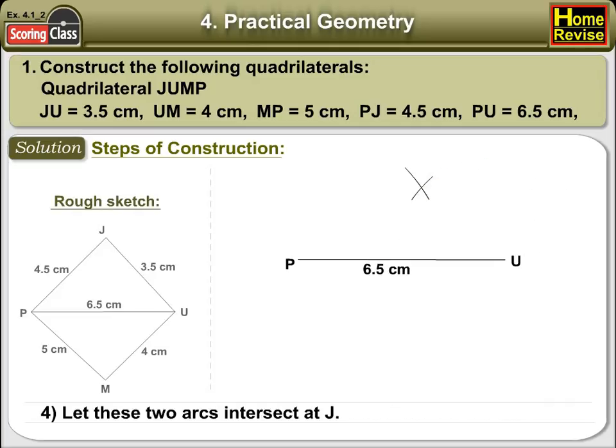Number 4. Let these two arcs intersect at point J. Join PJ and UJ.